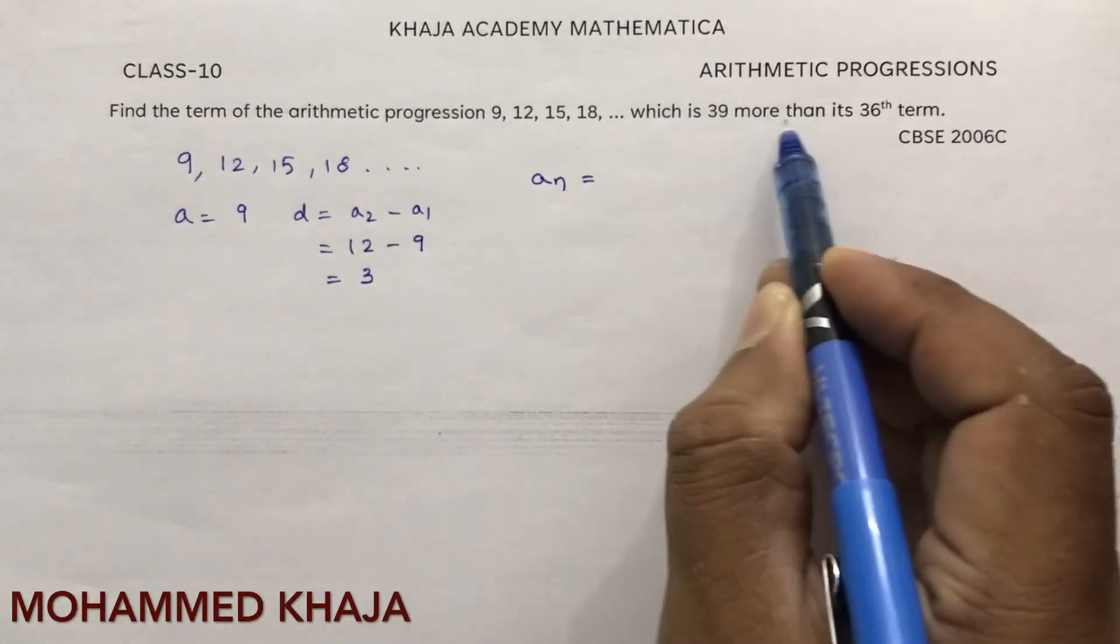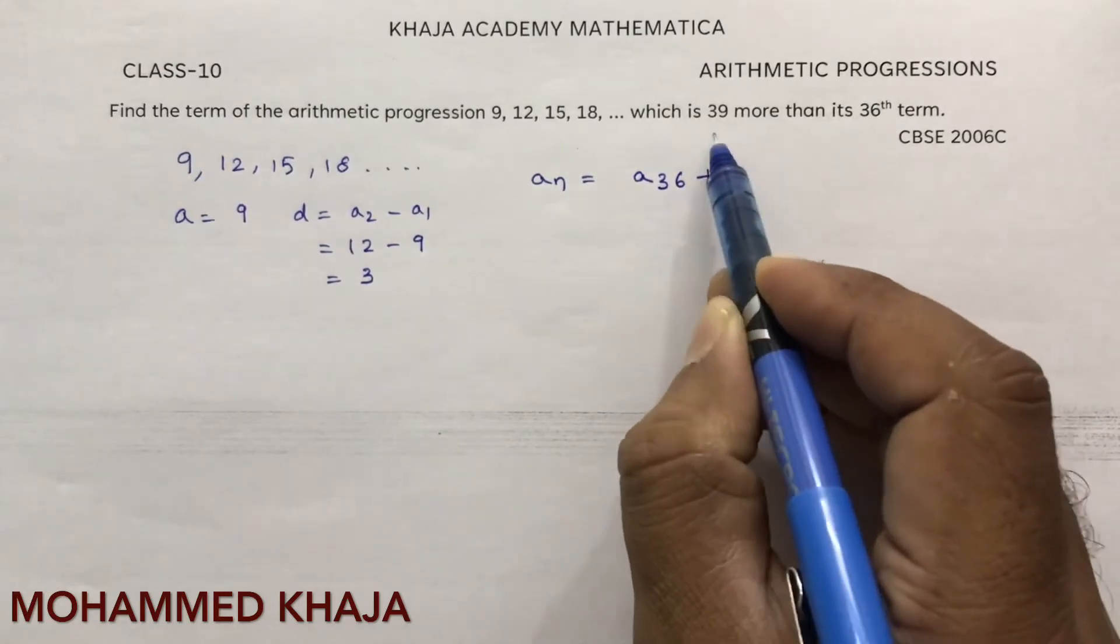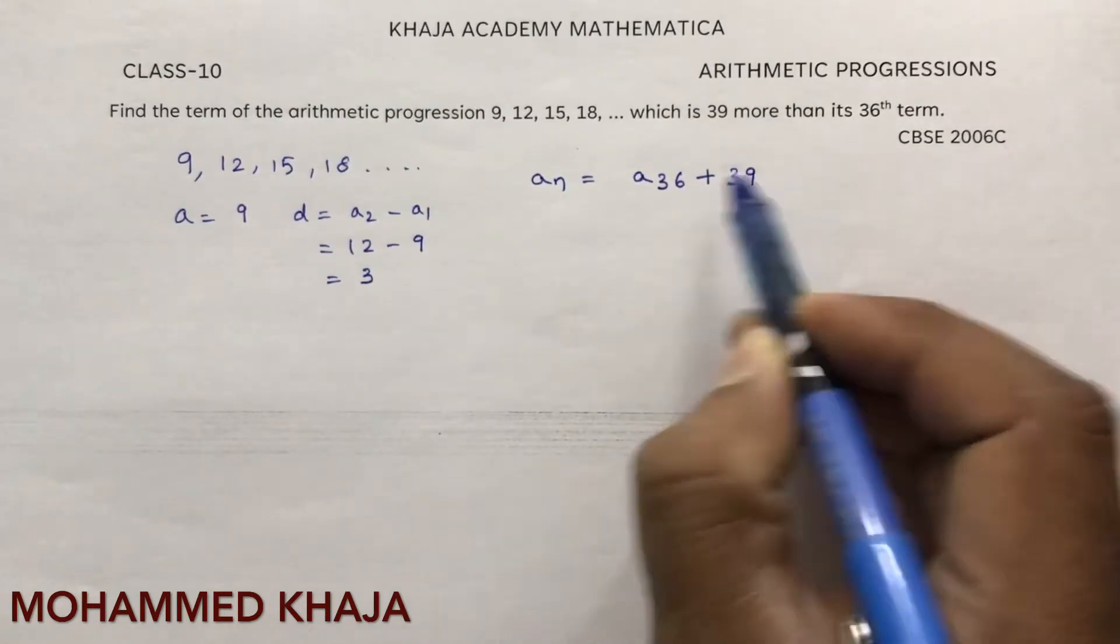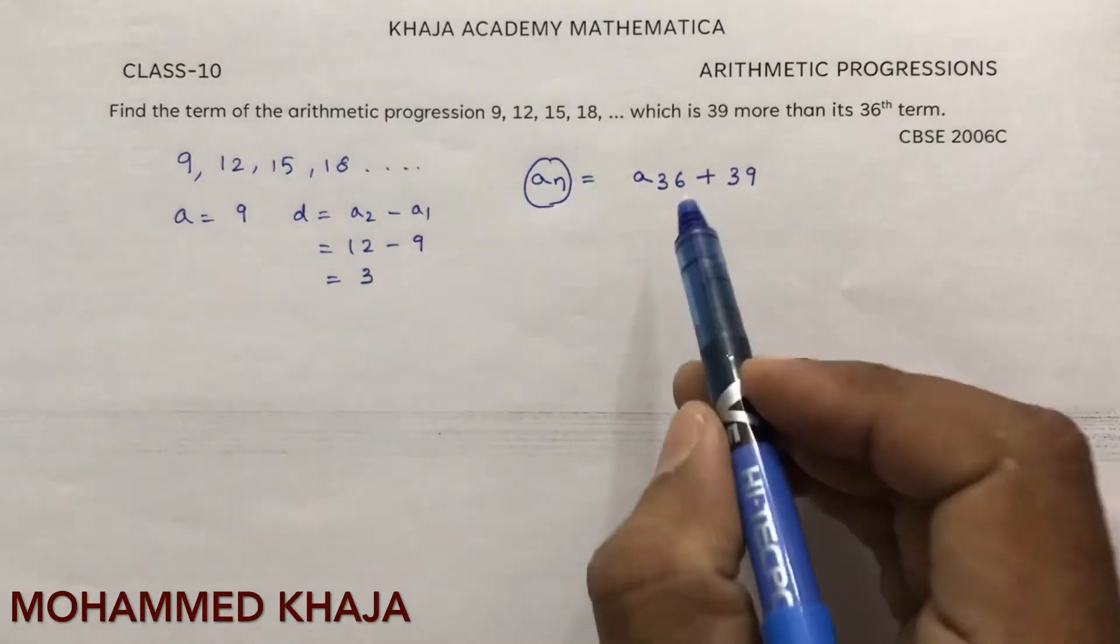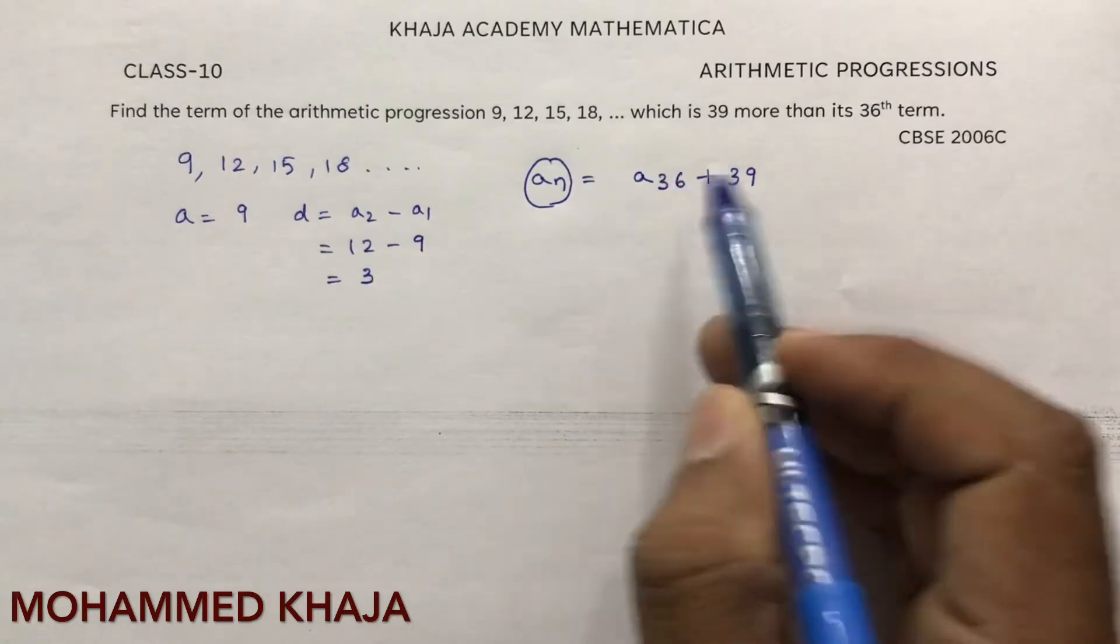Now we need to find which term an is 39 more than the 36th term. So an equals a36 plus 39. We need to find this term which is 39 more than the 36th term.